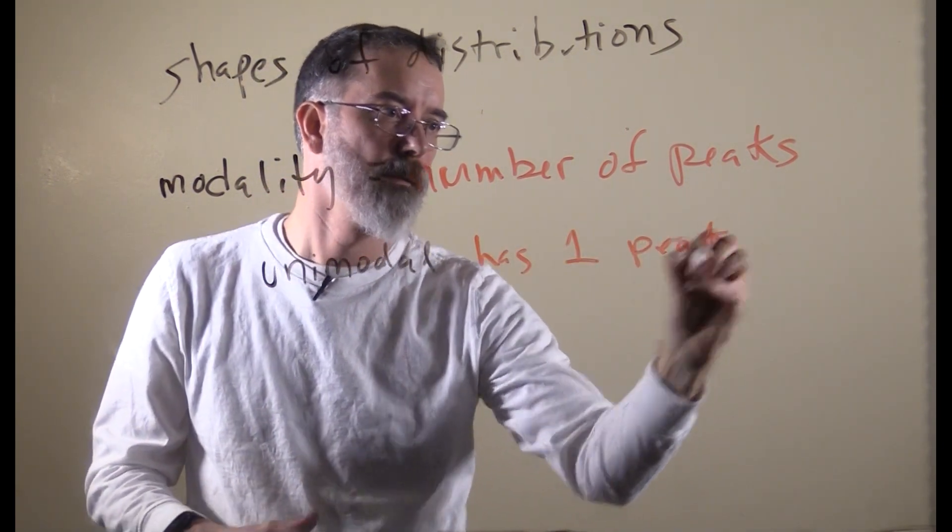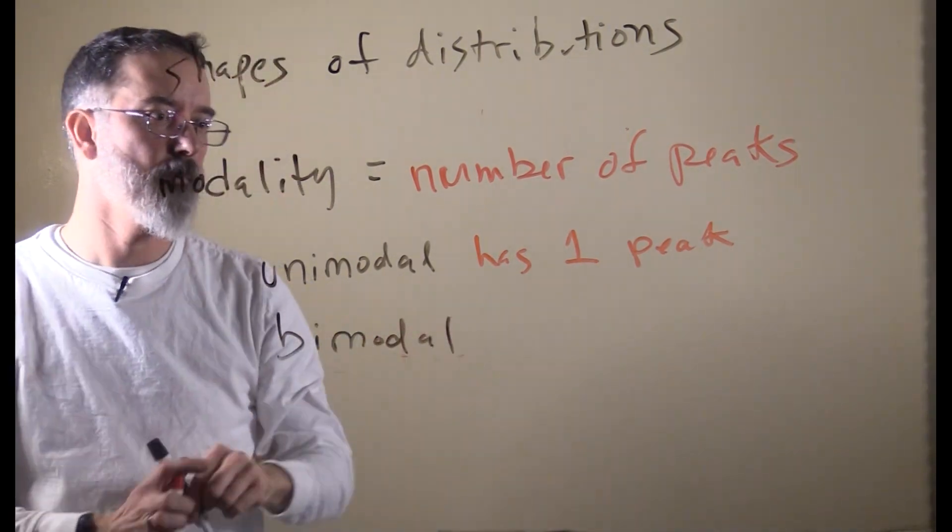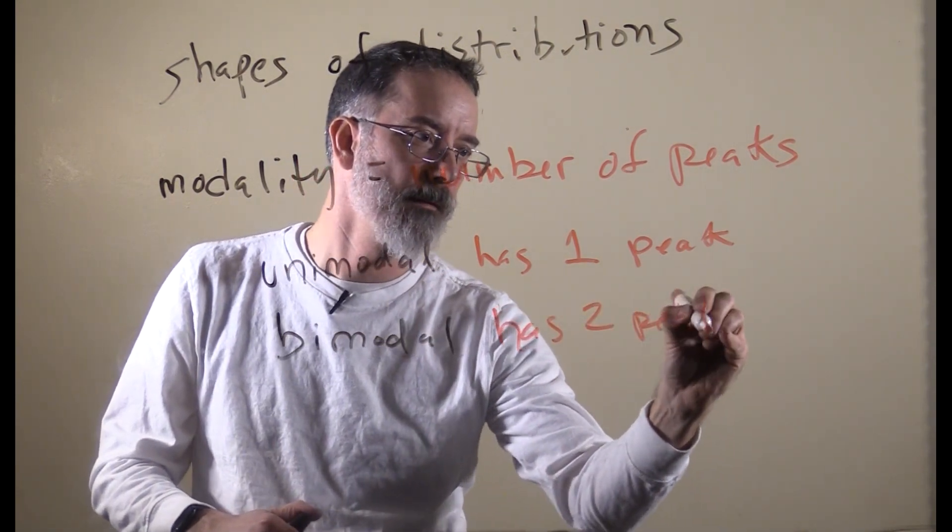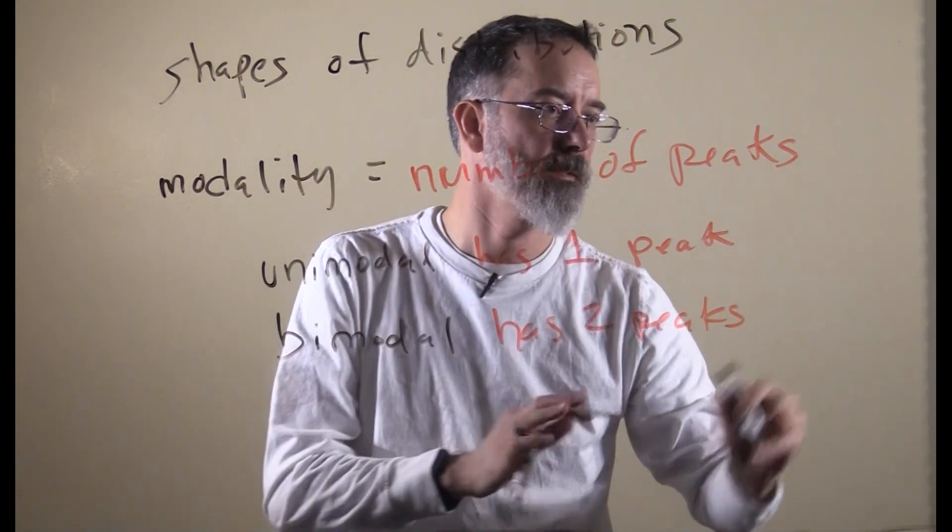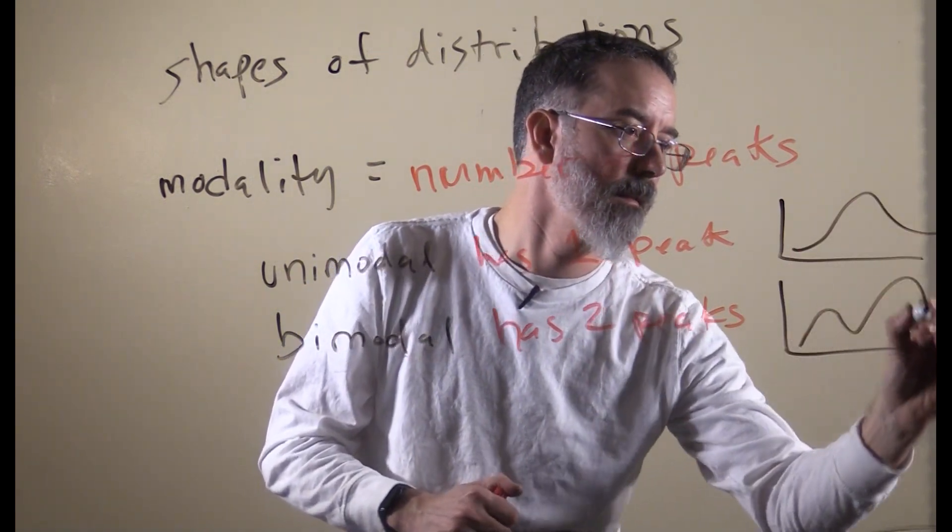A unimodal distribution has one peak, a bimodal distribution has two peaks. The normal distribution is unimodal, bimodal might look something like that.